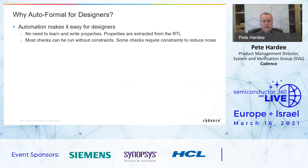So why automatic formal for designers? The first point is that automation makes things simpler and a lot easier for designers to pick up. Designers are not necessarily used to writing properties or SystemVerilog assertions, so those properties can be extracted automatically from the RTL. Most checks can be run without constraints; some checks do require constraints — a kind of formal property to be written to reduce noise.